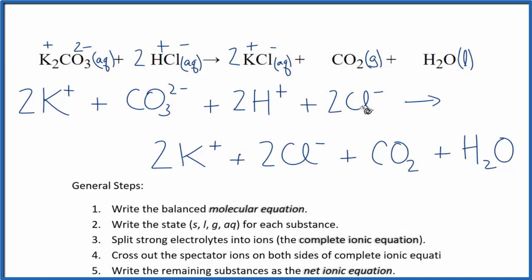Once we have this, we can now move to crossing out the spectator ions. These are ions that are on both sides of the equation. I see two K plus here in the reactants and in the products. It's not changed, it's the same thing. Let's just cross that out.